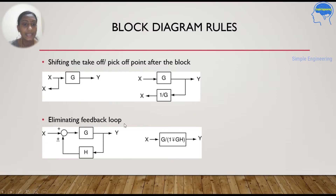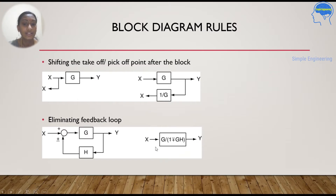Next is eliminating the feedback loop. This is a system which has a feedback loop. There is a summing point, one forward block G, and a feedback block H. To eliminate the feedback loop, depending on the sign — whether it is positive or negative feedback — you reduce the block as G/(1+GH) for negative feedback and G/(1−GH) for positive feedback.